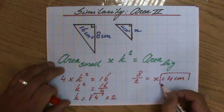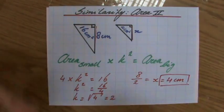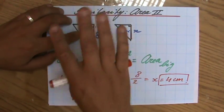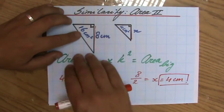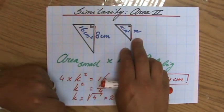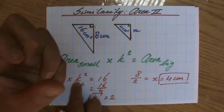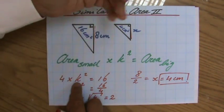And not two centimeters like some students will say because they say oh I'll divide the area—16 divided by 4 is 4, scale factor is 4, 8 divided by 4 is 2. No, because when we're looking at area we have to take into account that we're talking about the scale factor squared.